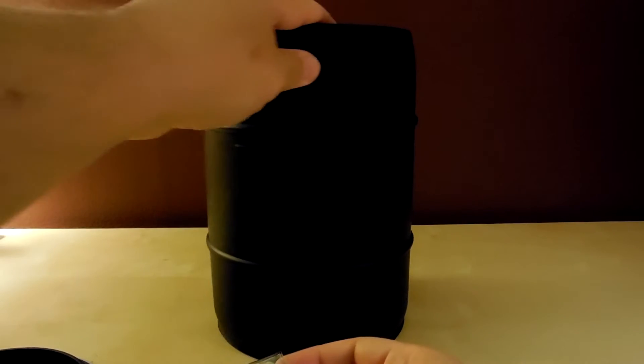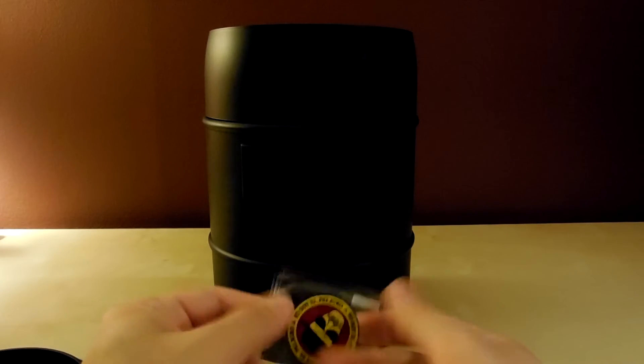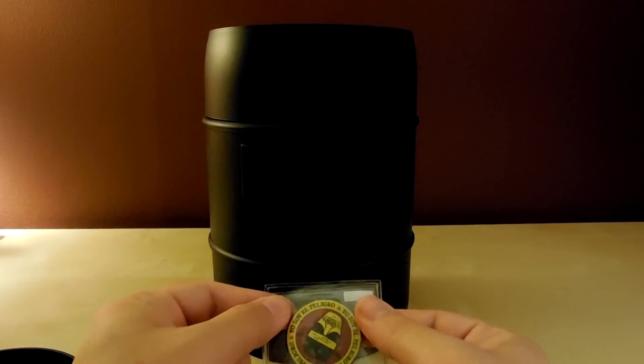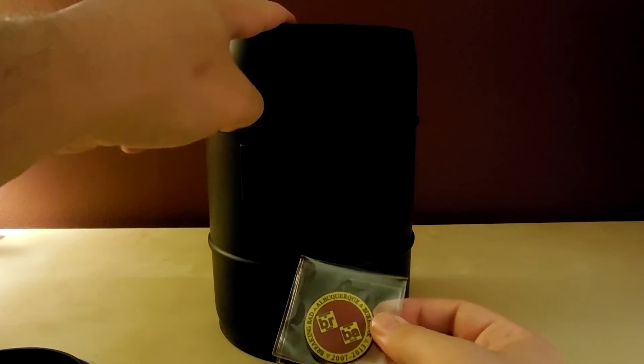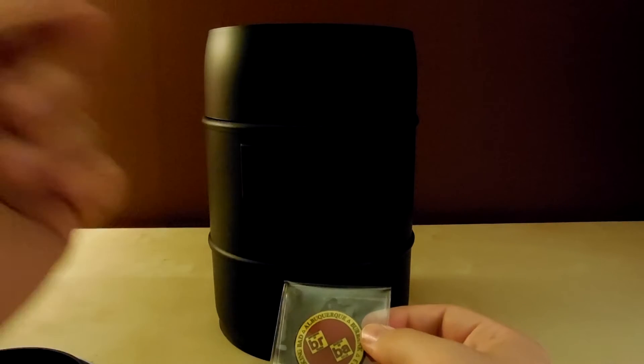And there's only a couple things in here because everything else has been taken out. There was a Better Call Saul matchbook type thing that was also like a USB, but my dog chewed the shit out of it, so I don't have that anymore. It was only like a gig or something. I don't even know if it was that, but it was pretty cool. And then it had a Los Pollos Hermanos apron, which I think I still got somewhere.